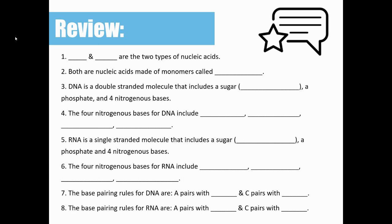Number six, the four nitrogenous bases for RNA. Three are going to be the same as they were for DNA: adenine, cytosine, guanine, but we're not going to see thymine in an RNA molecule. Thymine is going to be replaced with uracil.